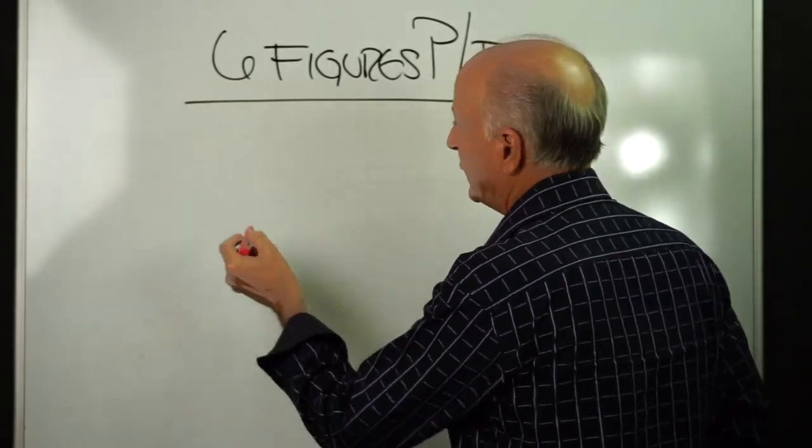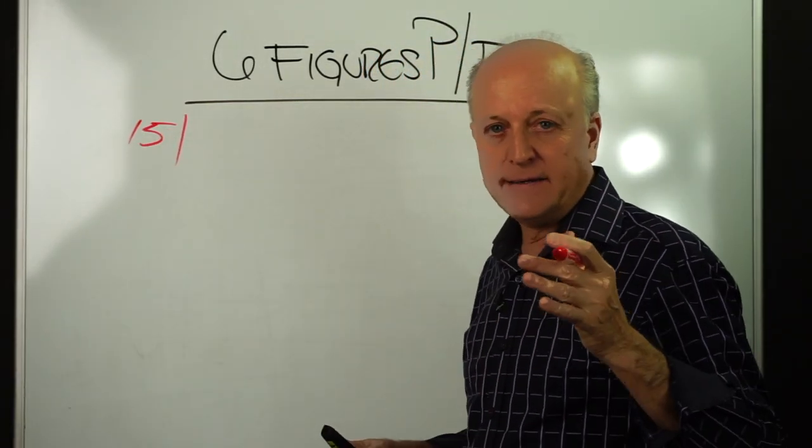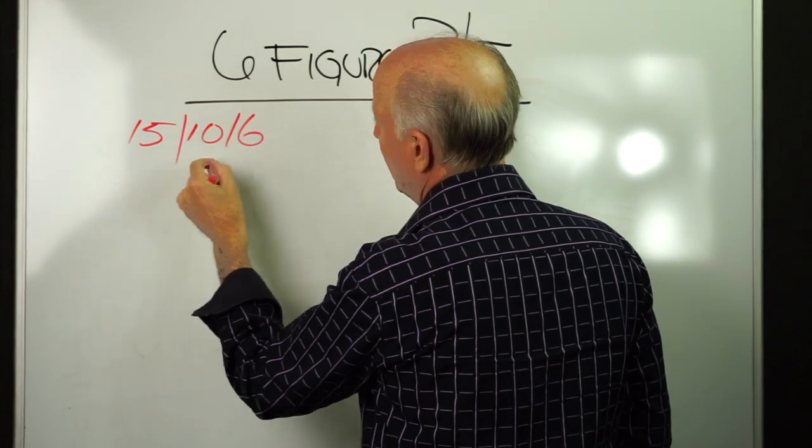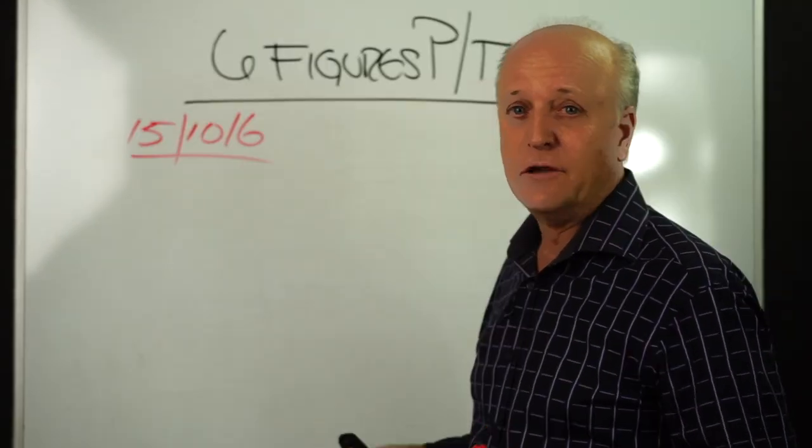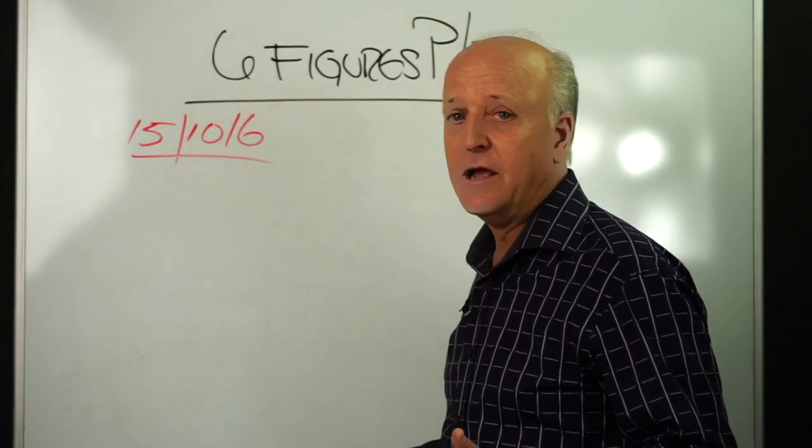I want to talk about simple numbers to earn six figures. Now full-time, we're going to consider 15, 10, and 6 as full-time, almost double what a part-timer will do. So remember, we're going to set 15 appointments, we're going to see 10, write 6.